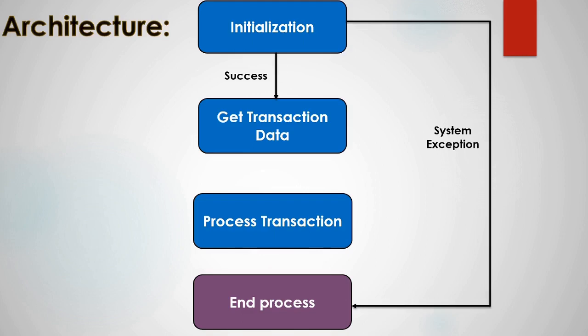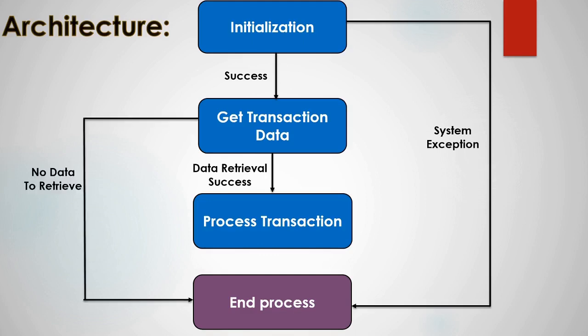The Get Transaction Data state is used to retrieve data from orchestrator queues, Excel sheets, databases, or wherever you have kept your project data. If data retrieval is successful, the flow moves to Process Transaction. If there is no data to retrieve, the flow moves to End Process.